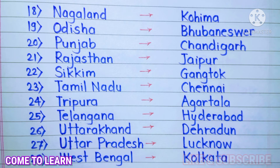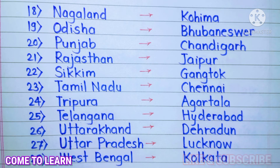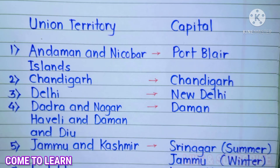26. Uttarakhand — Dehradun. 27. Uttar Pradesh — Lucknow. 28. West Bengal — Kolkata. Union Territories and their capitals.